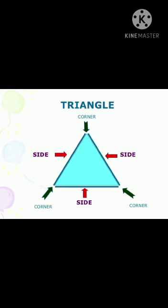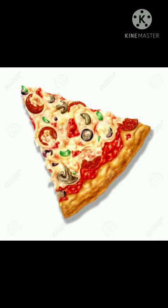Triangle. A triangle has three sides and three corners. For example, this is a sign board — it is triangular in shape. Another example: pizza.